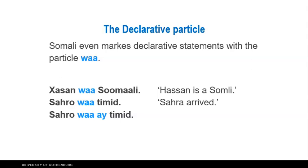In this kind of sentence where we have two nouns, and in English or Swedish we have 'is' between them, Somali doesn't have any verb at all. There is no verb corresponding to 'is' in this kind of construction. So we only have the two nouns, and in between them we have the sentence particle — the declarative sentence particle — 'wa'. So: 'Hassan wa Somali' means 'Hassan is a Somali'.